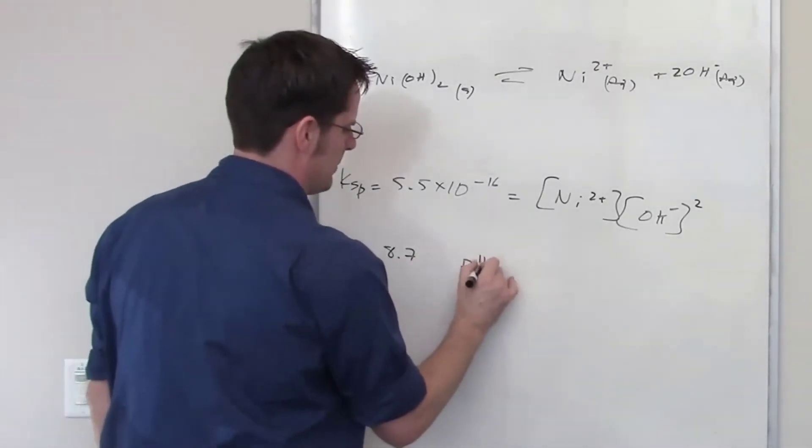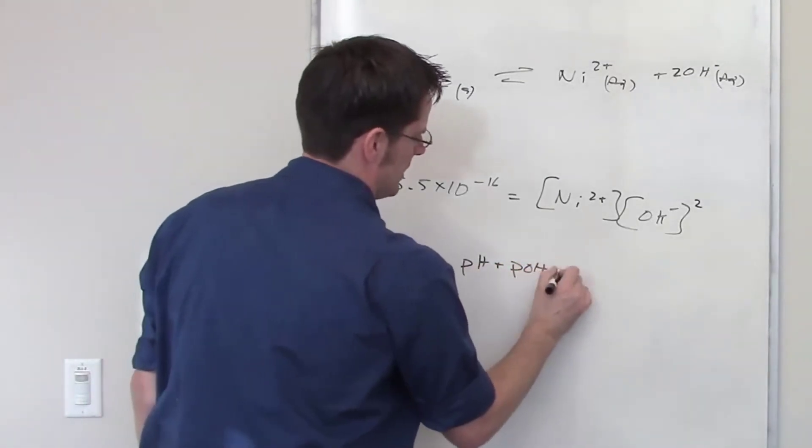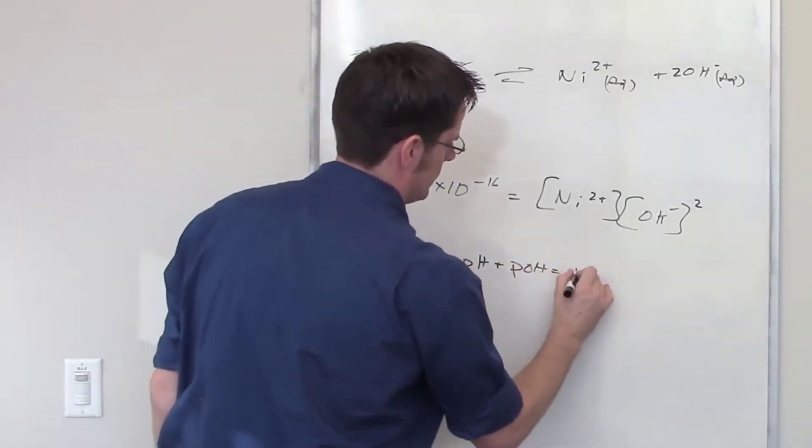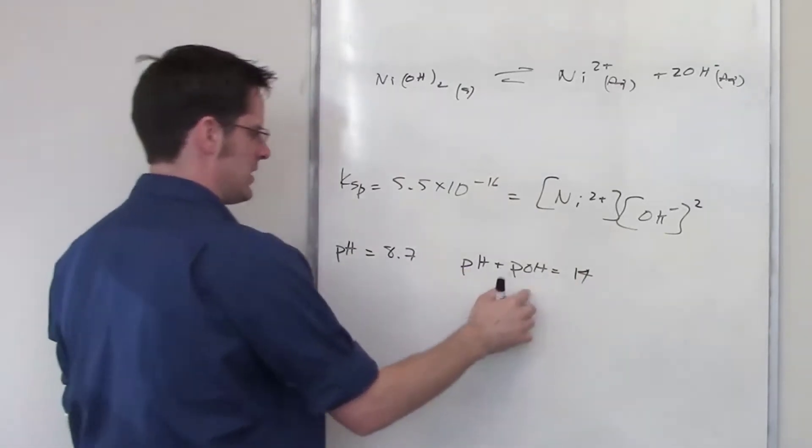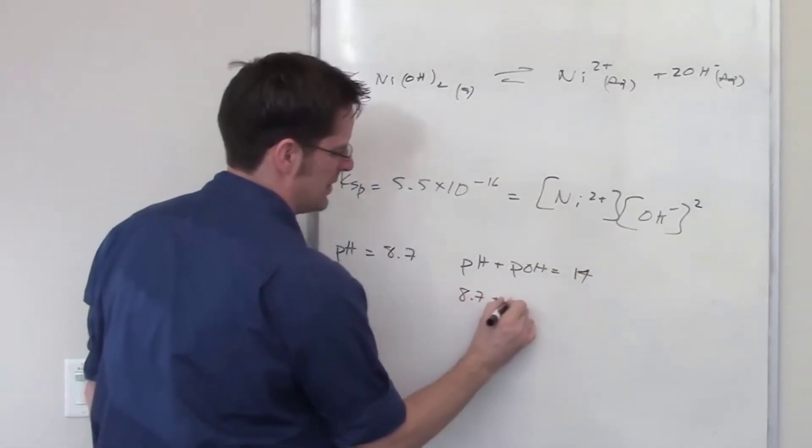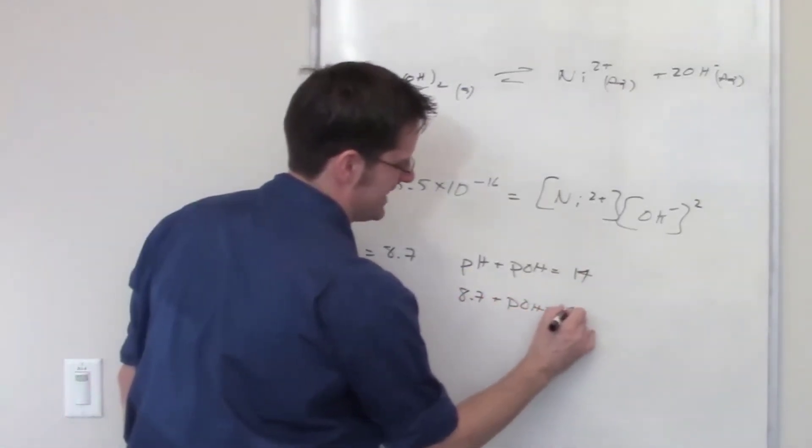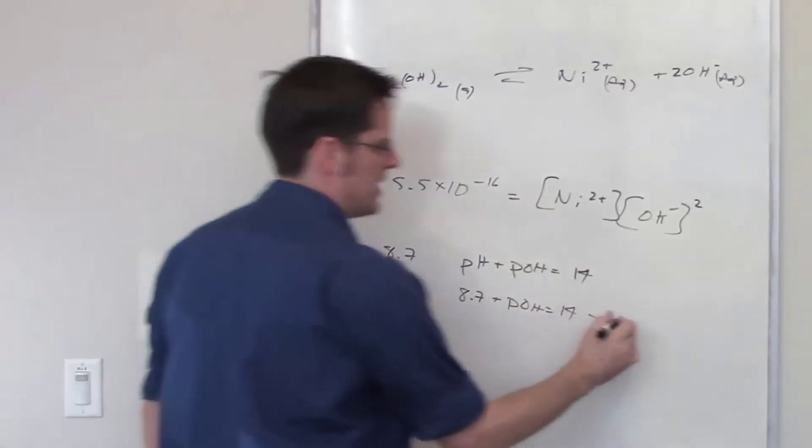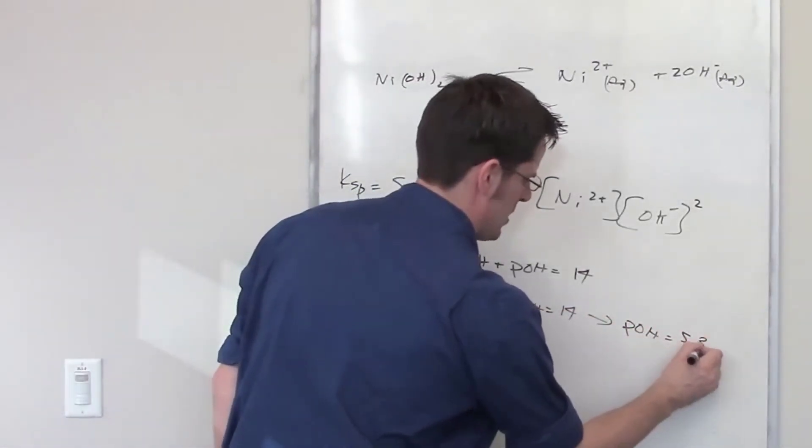Foremost is this. We've got this old equation that says that pH plus pOH is equal to 14. I've got pH. Can I solve for pOH? Well, sure, I've got 8.7 plus pOH equals 14. pOH then is going to equal 5.3.